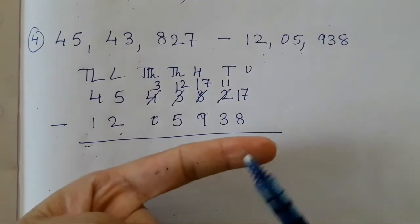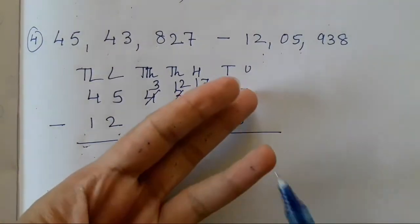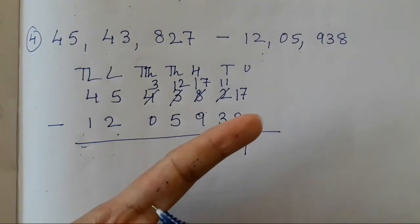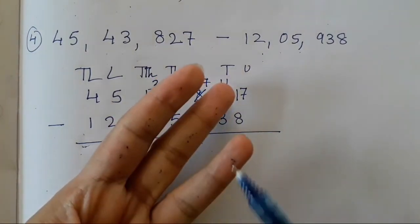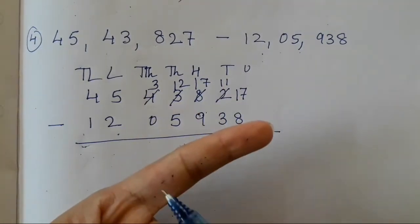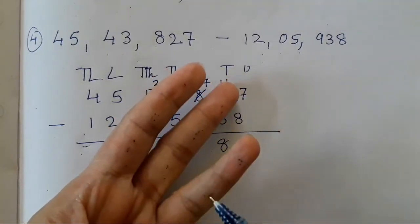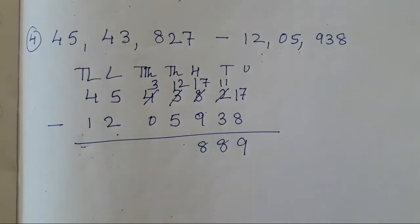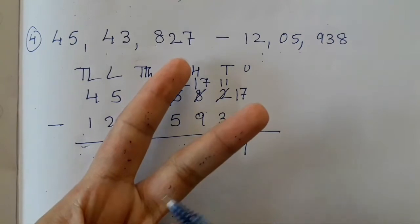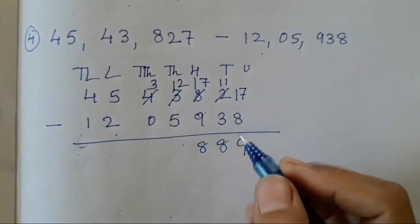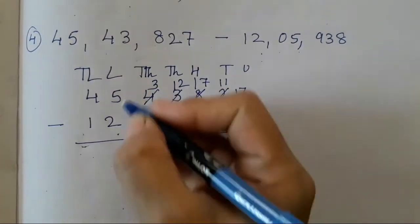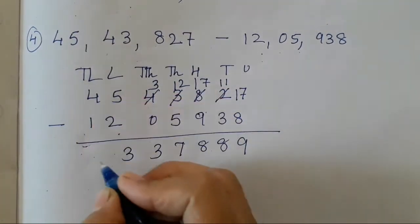Count after 8: 9, 10, 11, 12, 13, 14, 15, 16, 17 — so the answer is 9. 11 minus 3: after 3, count 4, 5, 6, 7, 8, 9, 10, 11 — answer is 8. Count again to 17 — answer is 8. Count to 12: 5, 6, 7, 8, 9, 10, 11, 12 — we need 12, so the answer is 7. 3 will come as it is. 5 minus 2 is 3. 4 minus 1 is 3.